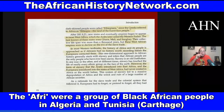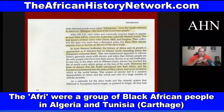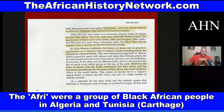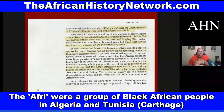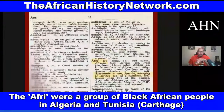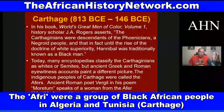After 300 AD, new states and eventually empires began to appear in inner West Africa, which the Arabs later called the Western Sudan. The best known of these states were Ghana, Mali, and Songhai. Their collective lifespan was more than a thousand years, but these West African empires were in decline on the eve of the transatlantic slave trade. In today's class we're going to talk about Hannibal Barca, the Punic Wars, the Carthaginians, and Carthage. We go through history chronologically, dealing with thousands of years of history and what leads up to the transatlantic slave trade.